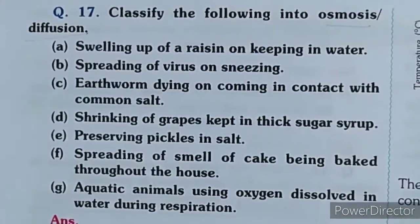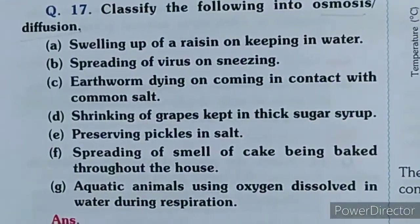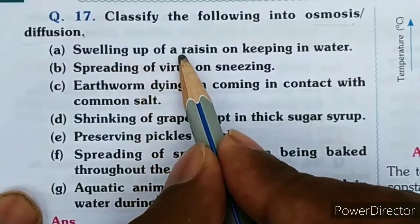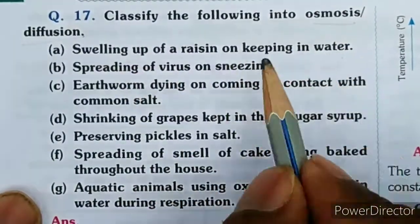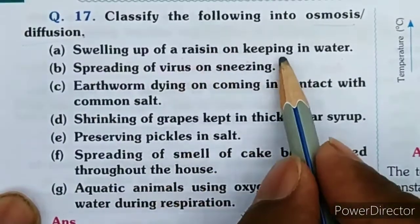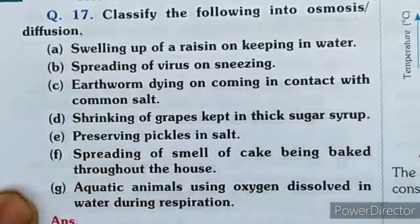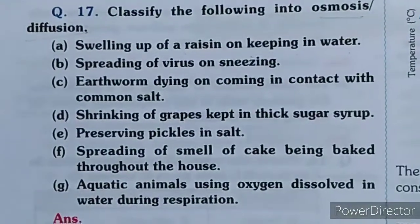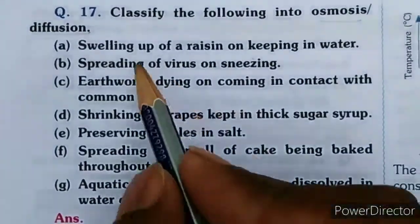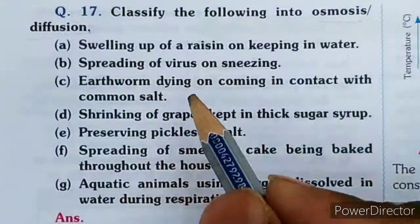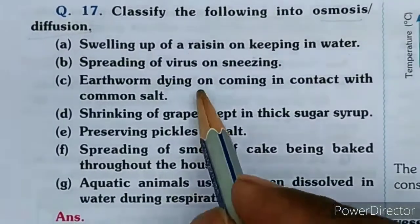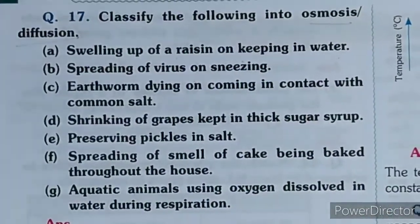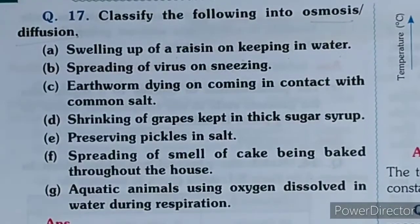First, swelling up of a resin on keeping in water - if we keep resin in water it will swell up, so which process is this? Swelling of resins is osmosis. Spreading of virus on sneezing - virus particles spread in air, this is an example of diffusion.